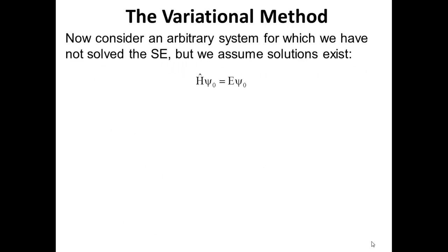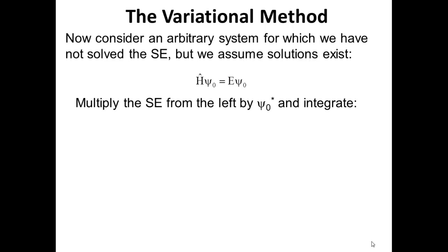Now let's think about a problem that we don't have an analytical solution for, and how we would go about approaching this. We don't have the solution to the Schrodinger equation for the problem we're interested in, but we assume that there is a solution — it's just that we don't have the mathematical methods to easily get there, but the solutions exist because the system actually exists. So we take the equation and multiply on the left-hand side by psi_zero-star, on both sides, and then integrate over the appropriate coordinates — here indicated as tau, meaning whatever coordinates are appropriate for the system of interest.